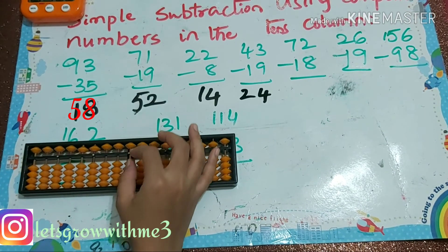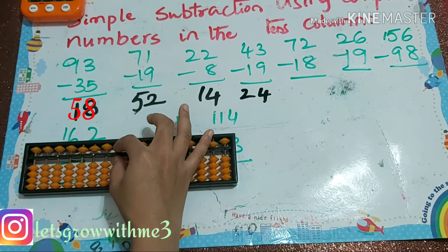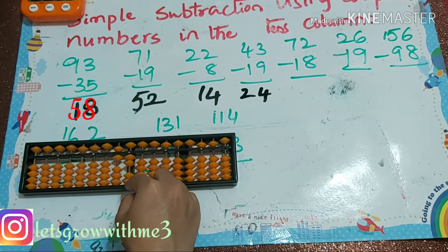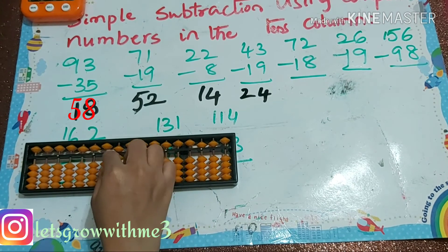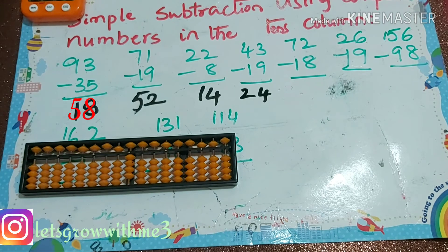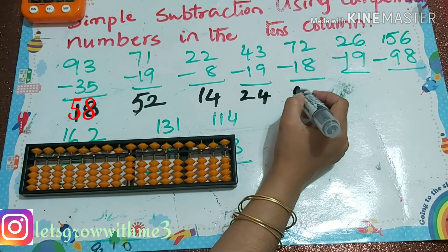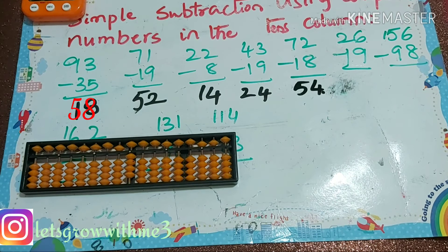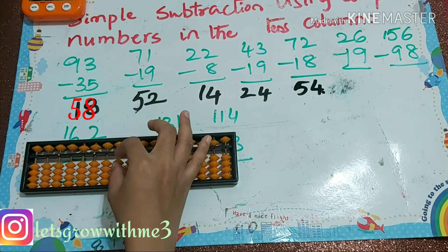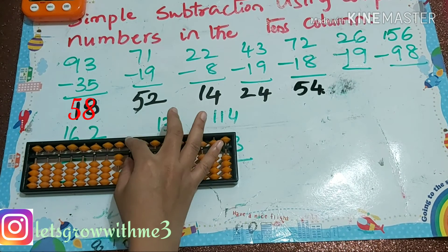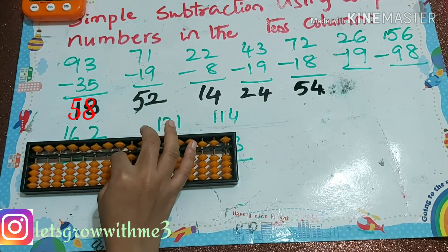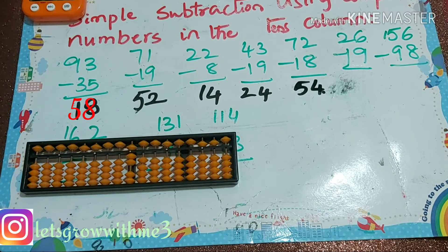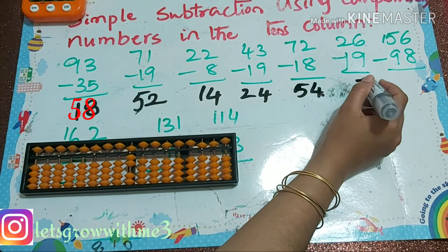Next one: 72 minus 18. Minus 1, minus 8 — how to do minus 8? Minus 10 plus 2. Our answer is 54. Next one: 126 minus 19. Minus 1, minus 9 — minus 10 plus 1. Our answer is 107.